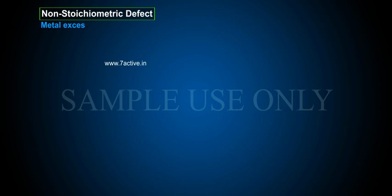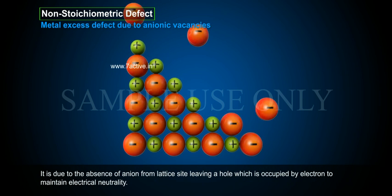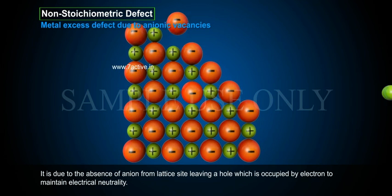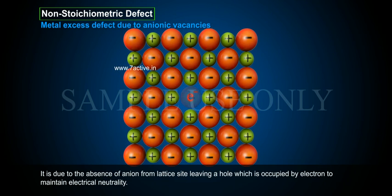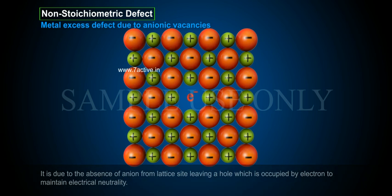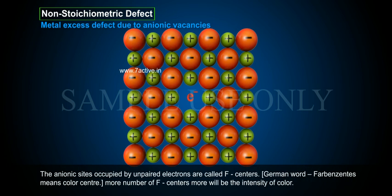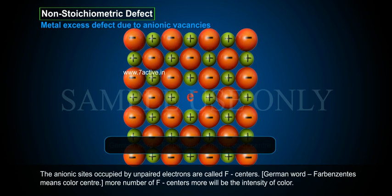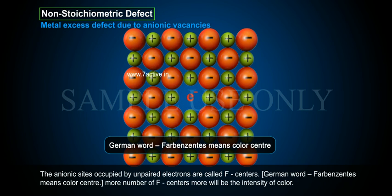Metal excess defect due to an ionic vacancy: It is due to the absence of an anion from the lattice site, leaving a hole which is occupied by an electron to maintain electrical neutrality. The anionic sites occupied by unpaired electrons are called F-centers. F-centers is a German word meaning color center. More F-centers means greater intensity of color.